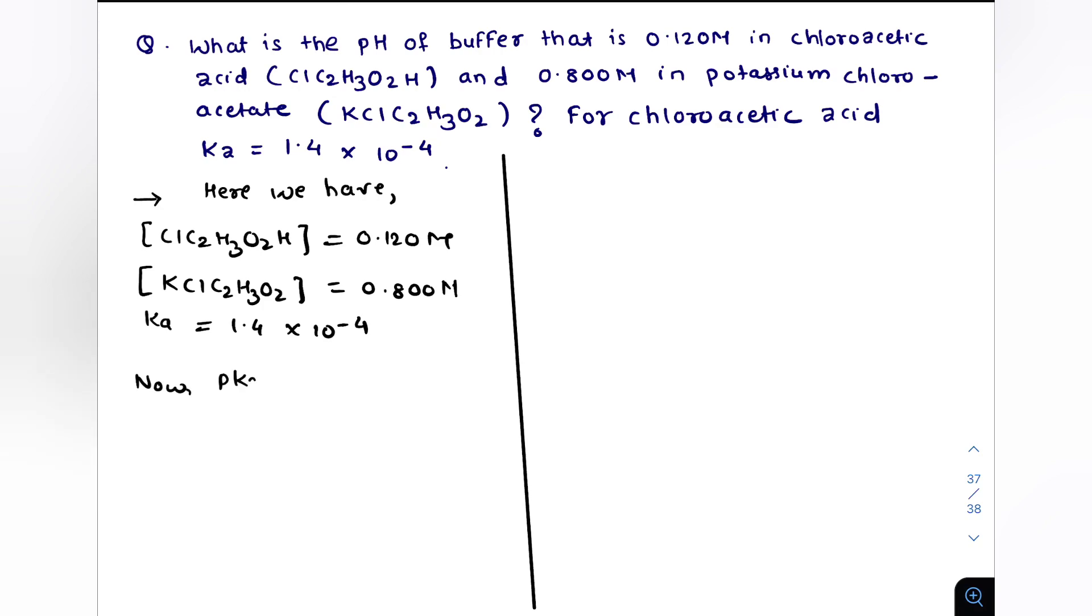Now we know the pKa value equals negative log of Ka. So we have the value of Ka, so we will determine the pKa which equals minus log of 1.4 × 10⁻⁴. So using the calculator we will get the pKa value which is going to be equals to 3.85.